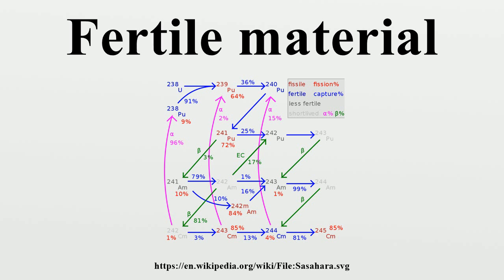Artificial isotopes formed in the reactor which can be converted into fissile material by one neutron capture include plutonium-238, which converts into plutonium-239, and plutonium-240, which converts into plutonium-241.